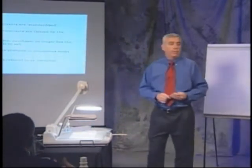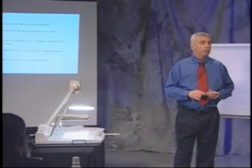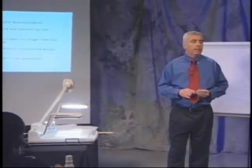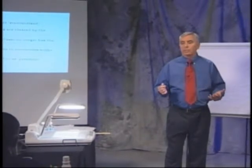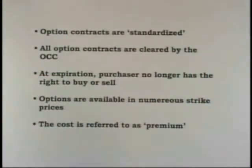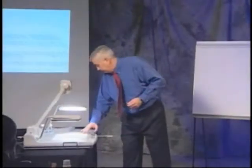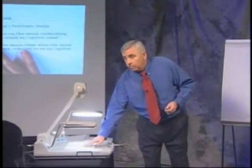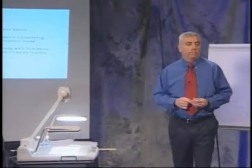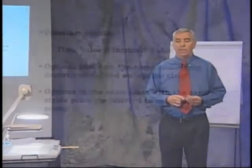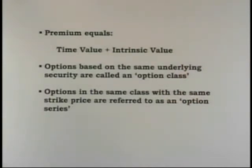All option contracts are standardized and they are cleared through the Options Clearing Corporation. At expiration, the purchaser — the owner of the option — no longer has the right to buy or sell the securities once the option expires. The cost of the option is referred to as the premium, and the premium of any option consists of time value and intrinsic value. The time value is based on factors like the time to expiration and the volatility of the market. The intrinsic value is the value of the option based on the underlying security.